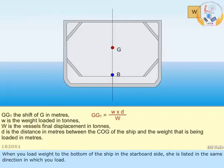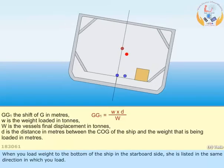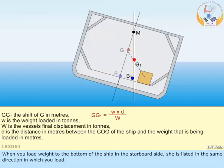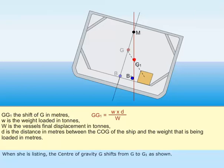When you load weight to the bottom of the ship in the starboard side, she is listed in the same direction in which you load. When she is listing, the center of gravity G shifts from G to G1 as shown.